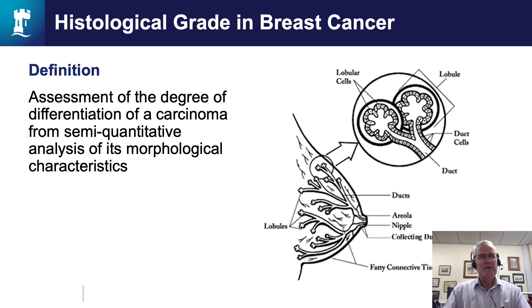Histologic grade is defined as the assessment of the degree of differentiation of a carcinoma. Semi-quantitative methodologies are now used for this type of approach. Essentially what a pathologist is doing is seeing how a breast cancer looks and comparing it with how a normal breast lobule looks down the microscope stained with an H&E section.